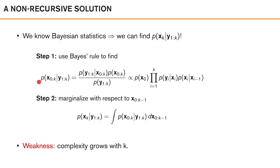First we can use Bayes' rule to find the posterior density of the complete sequence of state vectors — the collection of states from time 0 to time k — conditioned on all the measurements up to time k. Using Bayes' rule we can flip these two such that we get a factor where the density is over the set of measurements conditioned on our state sequence, times the prior on our state sequence, and a normalization factor. We can regard this normalization factor as a constant since we are interested in this as a function of our state sequence. So we can express this posterior density over the state sequence as a product of our measurement models and our prior.